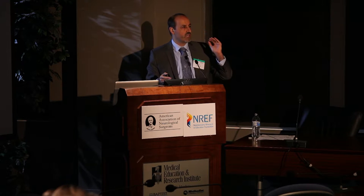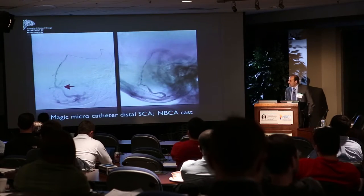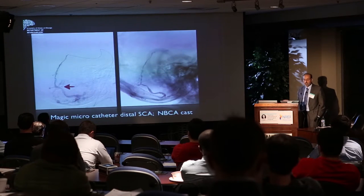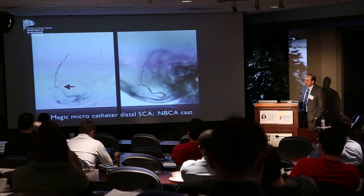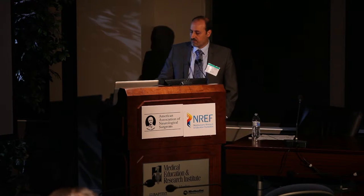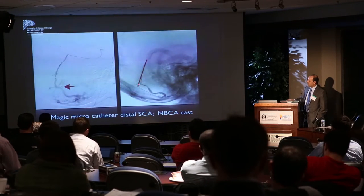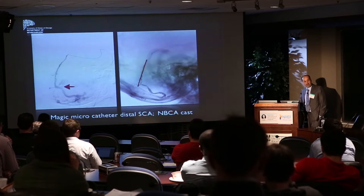Treatment requires an embolic agent reaching all the way into the vein to disconnect it, or surgery to disconnect it. This patient has feeders from multiple locations including the superior cerebellar artery. A magic microcatheter—probably the smallest available—is used for selective injection. You can see it going through the dura to the fistula site, showing the connection between artery and veins, with the draining vein running along the surface of the cerebellum.